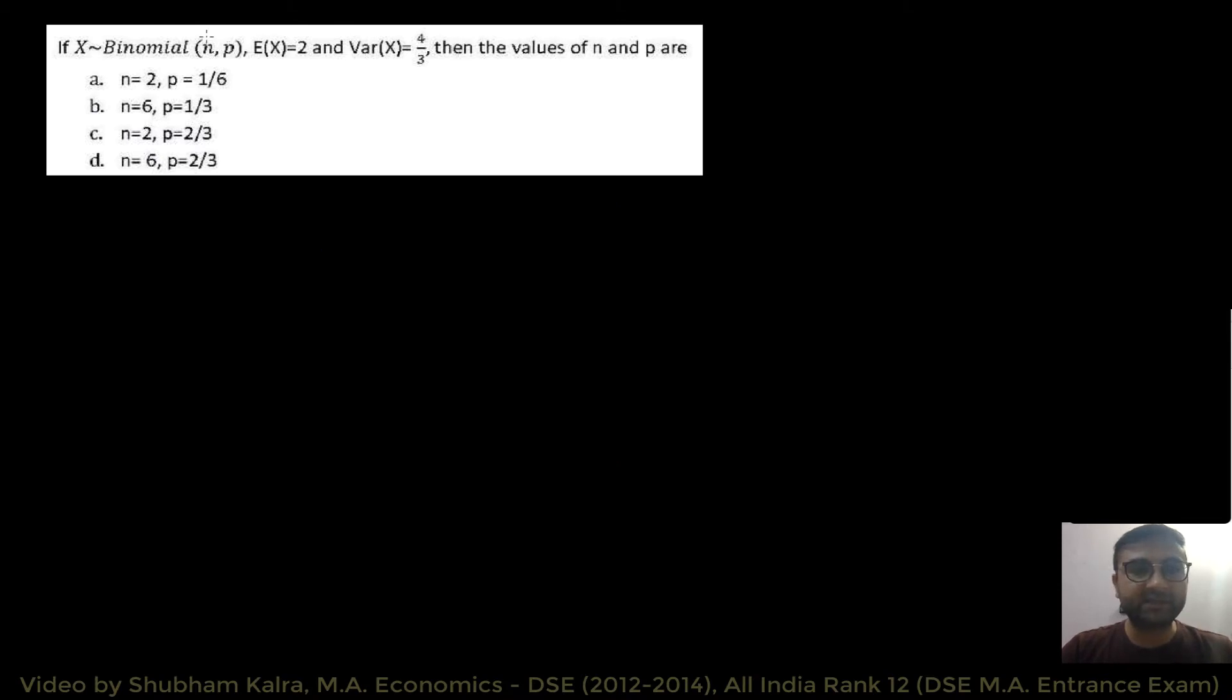If X follows a binomial distribution with N, P, and this is the expected value of X, this is the variance of X, then we have to find the values of N and P. So, now, we are given that the distribution of X is binomial. And, if you know your formulas well, then you will know that the expected value of X is N multiplied with P.